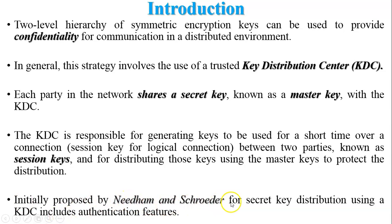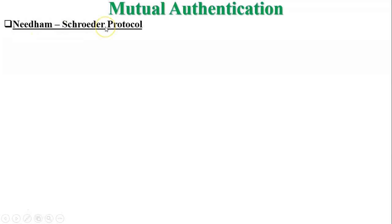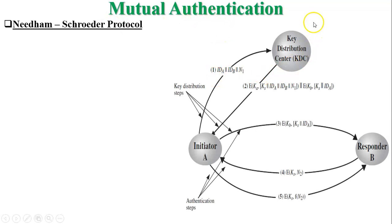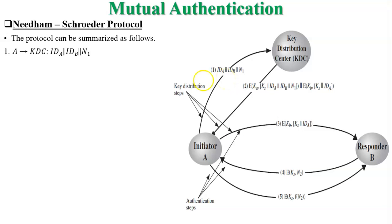Initially proposed by Needham and Schroeder for secret key distribution using KDC, this protocol includes authentication features and uses symmetric encryption for confidentiality. In the Needham-Schroeder protocol there is one KDC and two users: initiator A and responder B, where A starts the communication. In step one, A communicates with the KDC by sending its identity, the identity of B, and a nonce N1. The KDC generates a session key for communication between A and B, and sends a reply to A in step two.